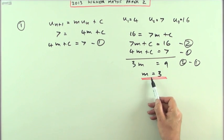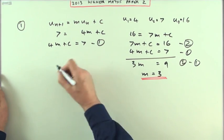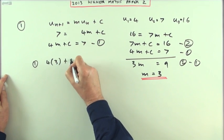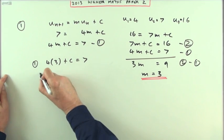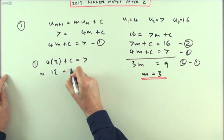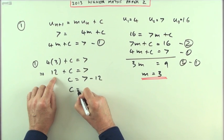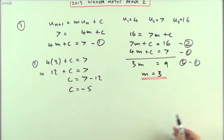Then, knowing what m is, you can pop back to either equation. Using number 1, I've got 4 times 3 plus c equals 7. So that means 12 plus c is 7. Take away the 12, so c is negative 5.